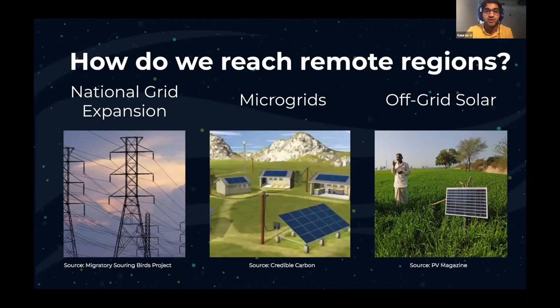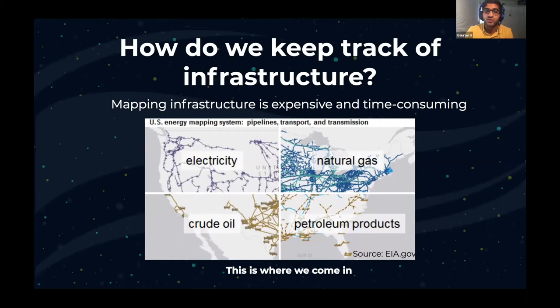Remote regions are hard to access, and data on electrification is sparse. When trying to expand energy access in a country, policymakers typically have three options: grid expansion, meaning they extend their national network; building a microgrid for an entire rural community; and targeted off-grid solar PV systems, which give direct power by the kilowatt. In order to figure out what method of expansion is best for a region, decision-makers need to know where current infrastructure lies.